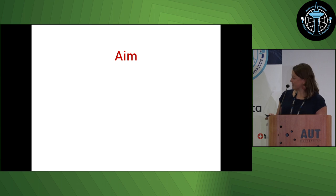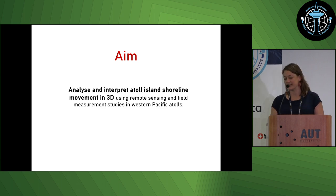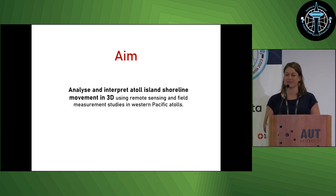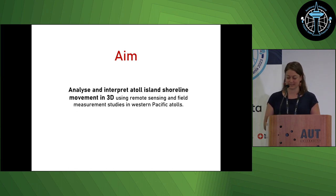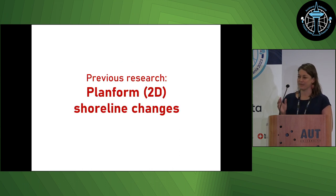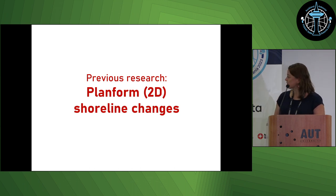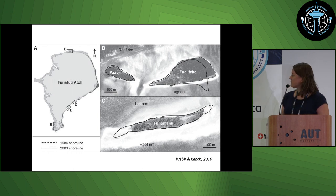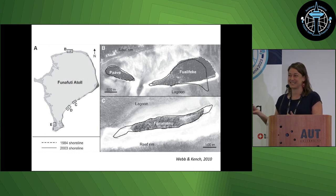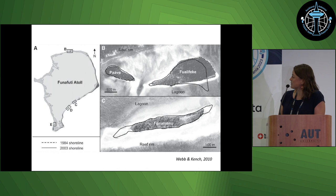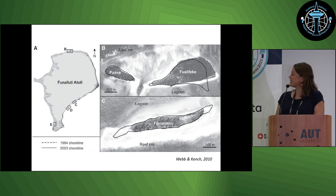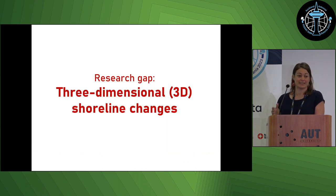The aim of my project is to analyze and interpret atoll island shoreline movement in 3D using drones and laser scanners. A lot of the previous research has focused on plan form changes — using modern satellite imagery and comparing it to historic aerial imagery to look at changes, such as this example from Funafuti Atoll. You can see how islands have been changing, but this is 2D, and the research gap is really what's happening in 3D.